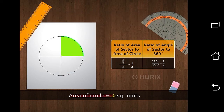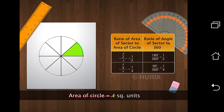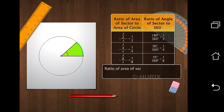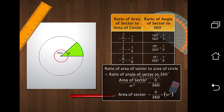Next, this sector is a quadrant and its area is one-fourth of the area of the circle. The angle of the sector is 90 degrees. Again, you can see that the ratios are equal. Similarly, when the sector is one-eighth of the area of the circle, the angle of the sector is 45 degrees, which is one-eighth of 360 degrees. The ratios become equal again. Therefore, the ratio of the area of the sector to the area of the circle is equal to the ratio of the angle of the sector, represented by theta, to 360 degrees. Thus, the area of a sector is equal to theta over 360 times the area of the circle.